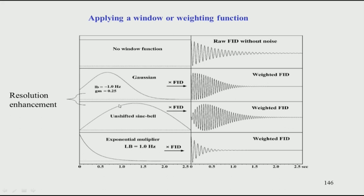Different window functions can enhance either resolution or sensitivity. A function that gives more weight to the later part of the FID can be multiplied with the raw FID, causing the initial portion to go toward zero but emphasizing the later portion — improving separation of peaks while decreasing signal-to-noise. This demonstrates the fundamental trade-off in NMR: if you want to gain sensitivity you have to lose resolution, and if you want to gain resolution you have to sacrifice sensitivity. They are complementary, and to gain one you must trade off the other.